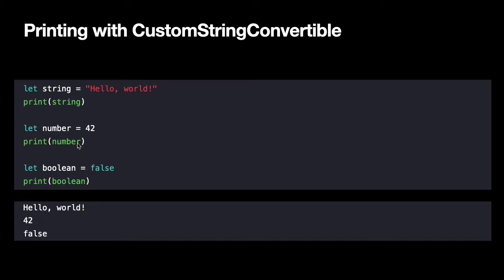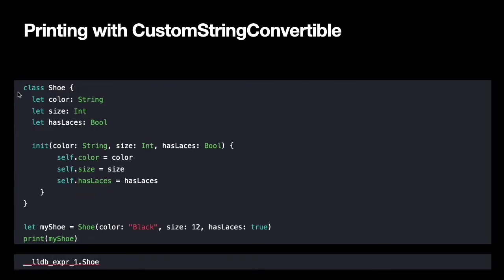Strings conform, integers conform, booleans conform, and if you make your own data structure conform to CustomStringConvertible, then you can use the print method on your data structures too. Here we have one of our own custom classes, Shoe. It has three properties, it has its initializer, we create an instance of Shoe, and we try to print it out. The only thing that prints out is the type of Shoe — we don't get any useful information, because we do not conform to CustomStringConvertible, so the print statement doesn't know what to print.